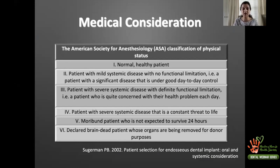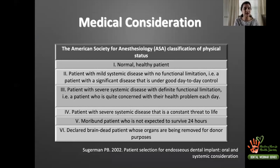ASA1 is considered normal, healthy patients. ASA2 is mild systemic disease without functional limitations. From ASA3 onwards we get into more challenging situations — ASA3 patients have severe systemic diseases with major functional limitations. ASA4 patients have systemic diseases presenting with a constant threat to life. ASA5 are patients not expected to survive within 24 hours, and ASA6 is brain-dead patients.